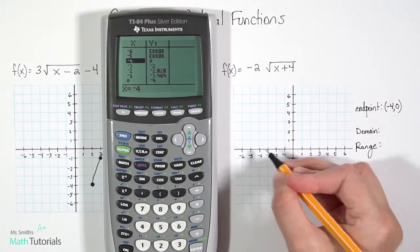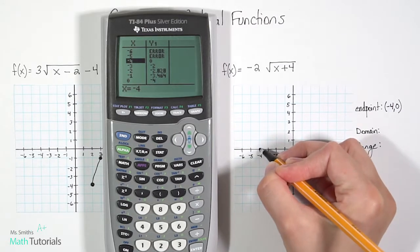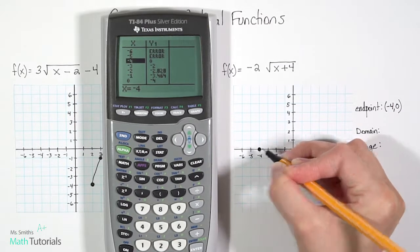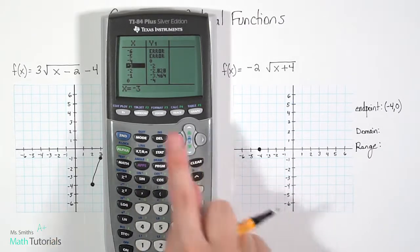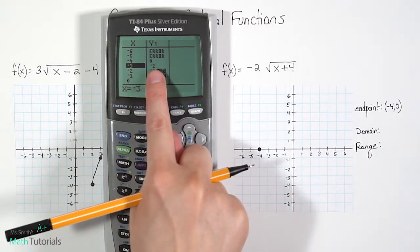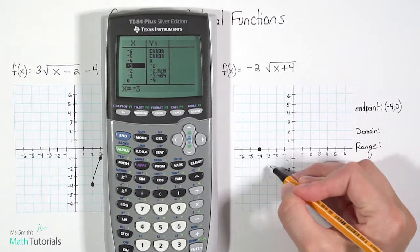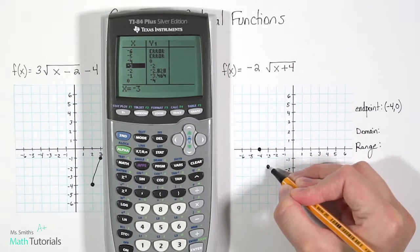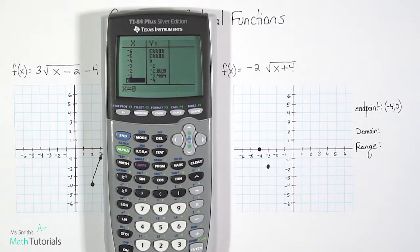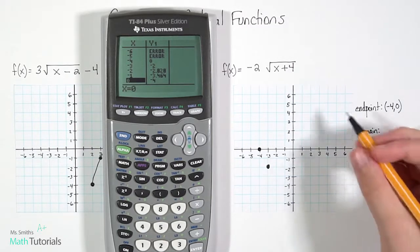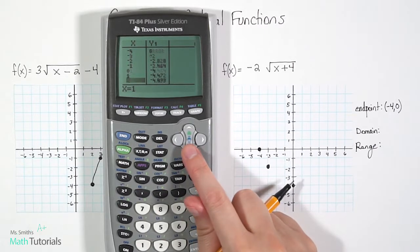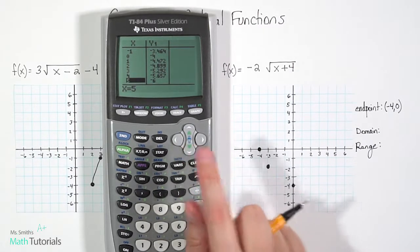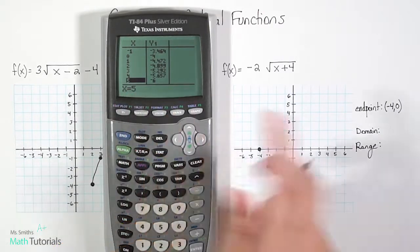So I can go ahead and plot that first point at negative 4, 0. Now from there, I want to plot some other points. So I also see negative 3, negative 2. Right there. And let's see, there's 0, negative 4. And let's see if we can get any more. I really only need like 3, but if you can get a few more, that's great. So 5, negative 6.